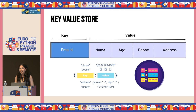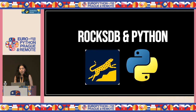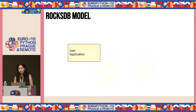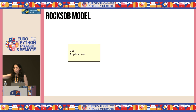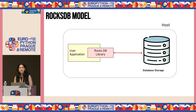Now let's get to the fun and exciting part — RocksDB and Python. Today I'll show you how you can use Python to harness the power of one of the fastest databases in the world. RocksDB is an embedded database. With traditional database systems, the application connects to a database server running on a separate host machine as a separate server process over the network. RocksDB sits directly with your application, running as part of the same process space.